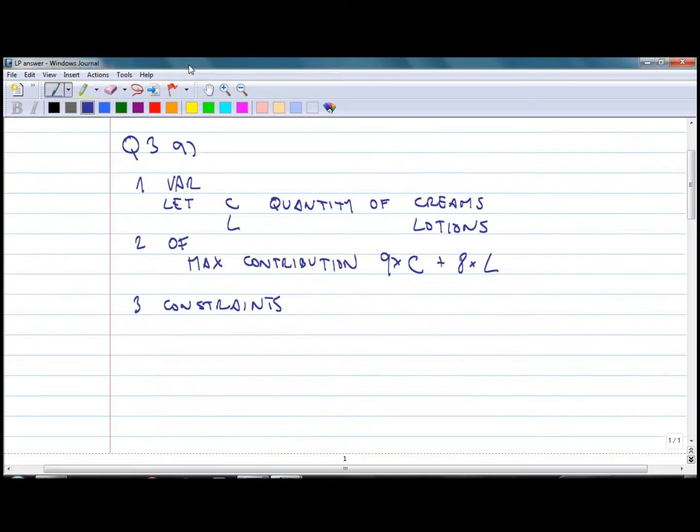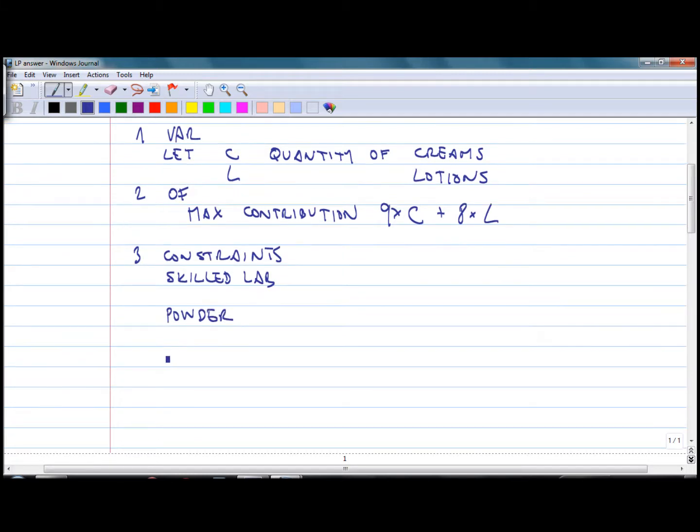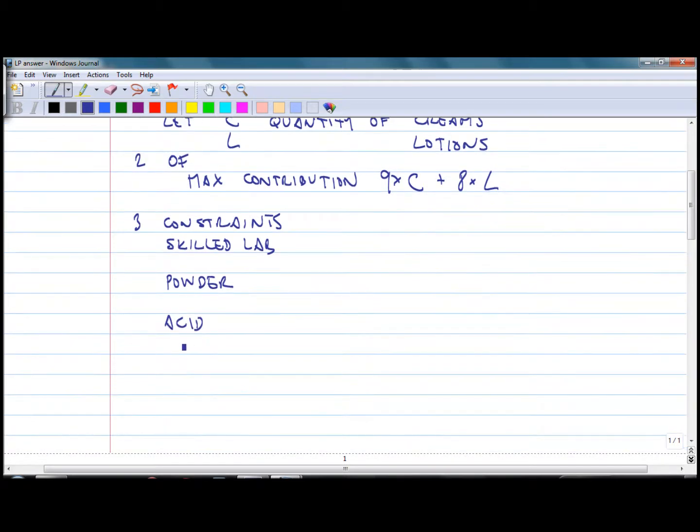The next step is definition of constraints. There were altogether four constraints. The first one was skilled labor. The next one was powder. Next one was acid. And the last one was related to lotion demand.